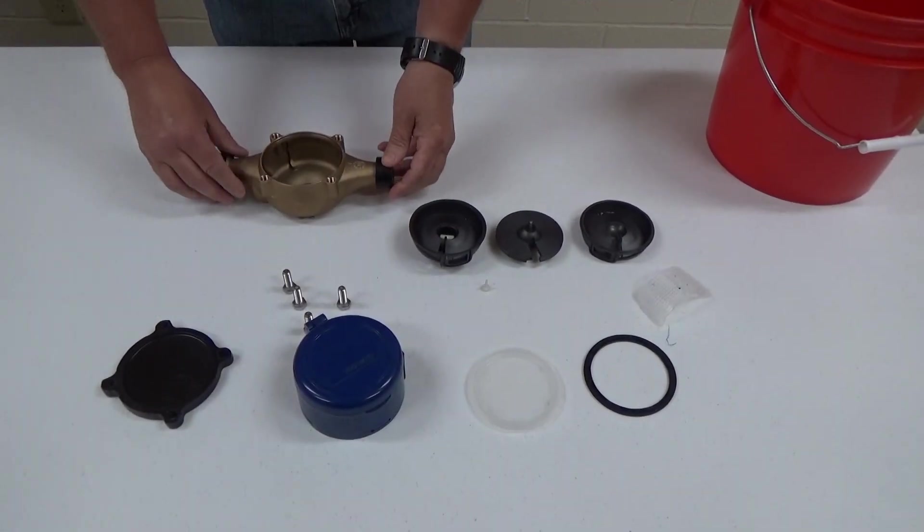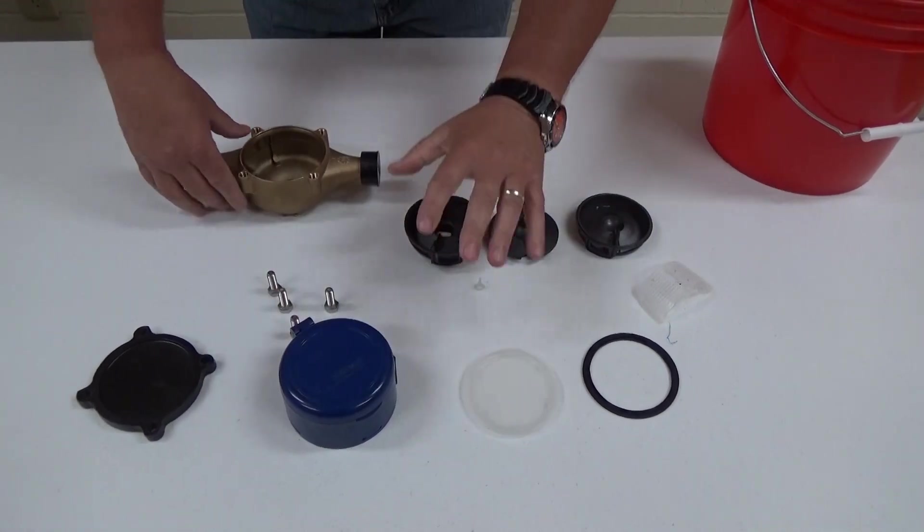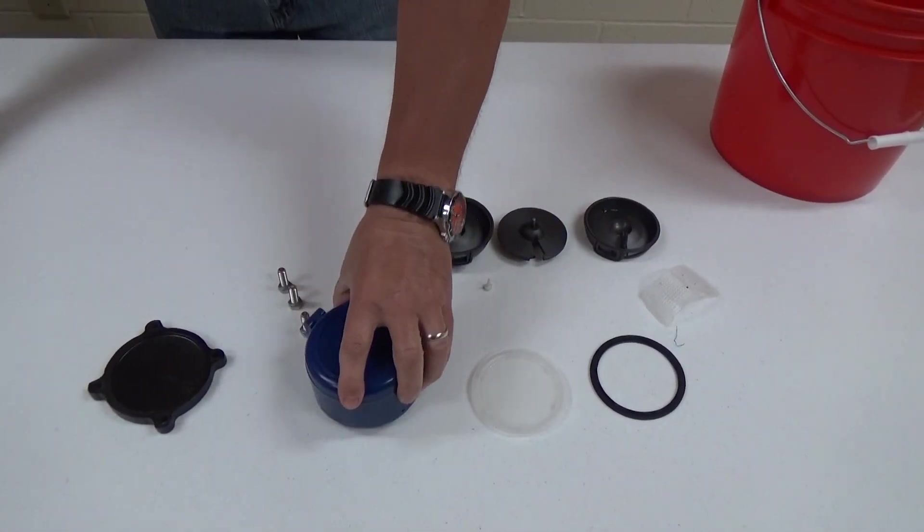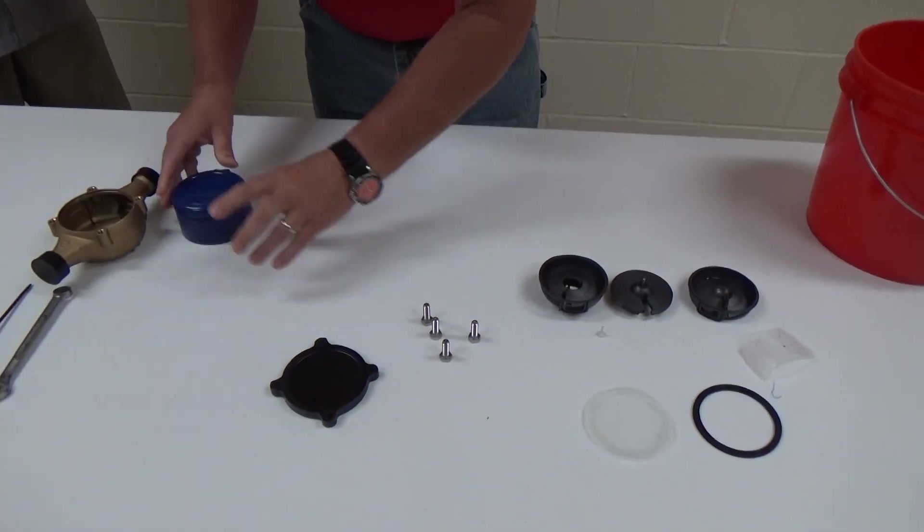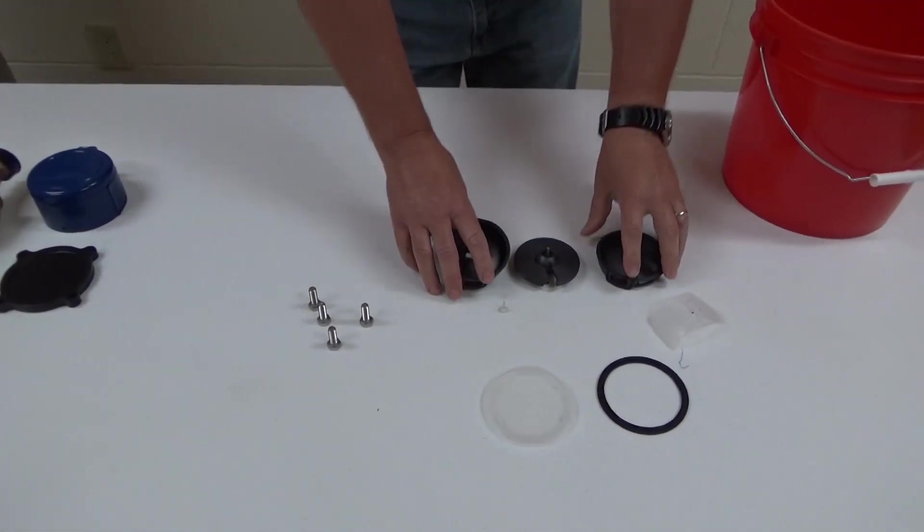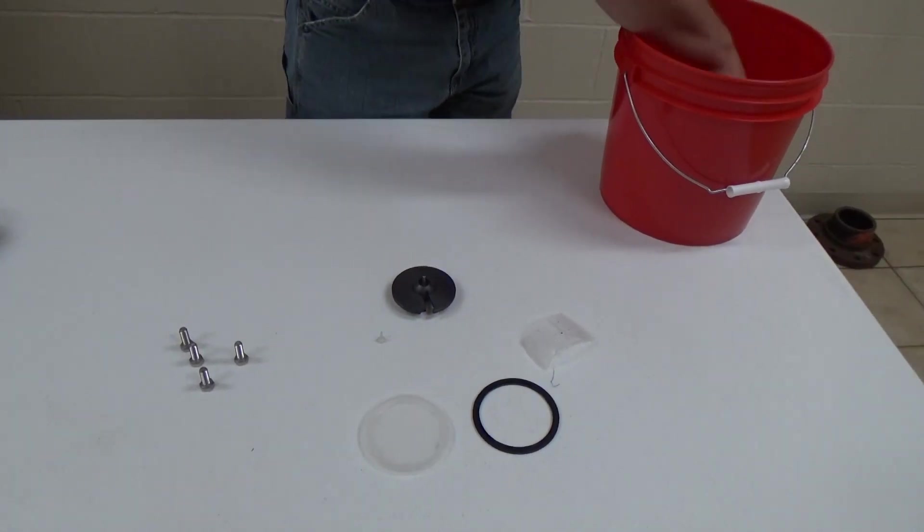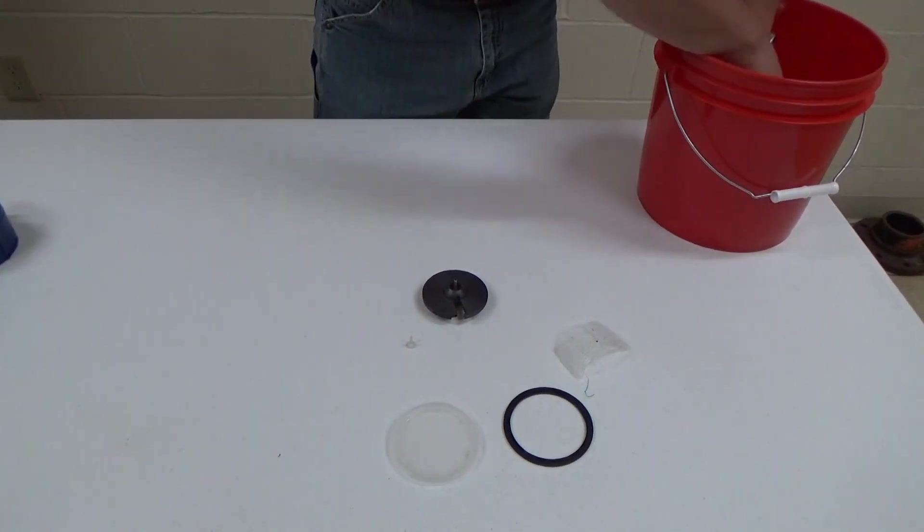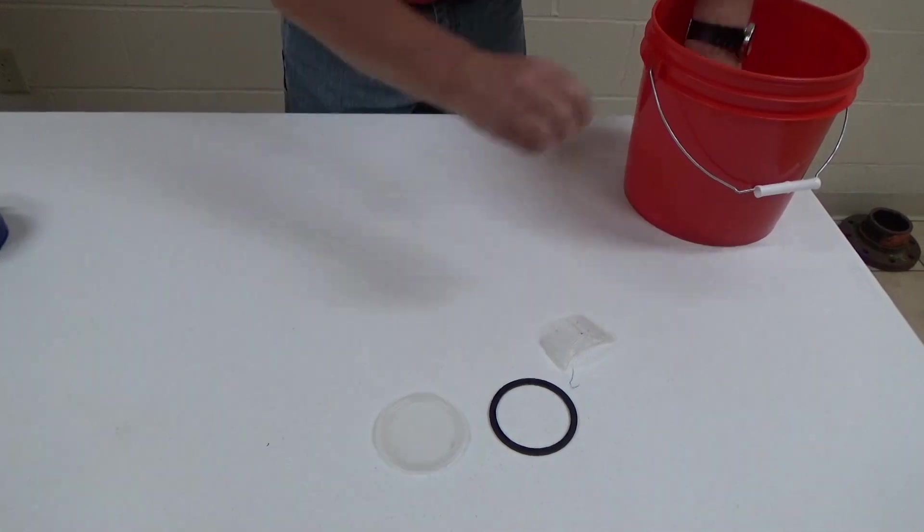The pieces that will go in the bucket is everything over here. Out of the bucket is the bronze body, the register lid, and the bottom plate. Now we will put into the bucket these pieces that you are going to flip over and begin the assembly.